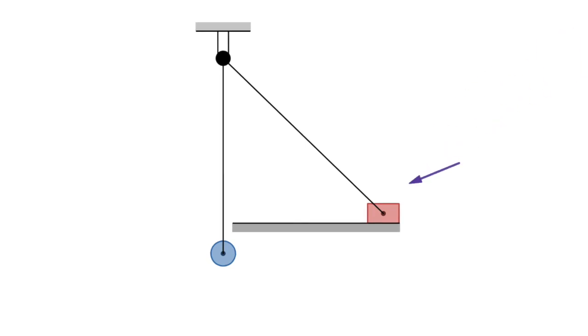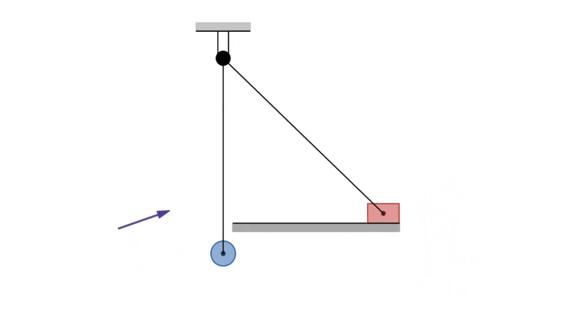A block that slides horizontally along a surface without friction is attached to a weight by a string that loops over a frictionless pulley which is above the block.